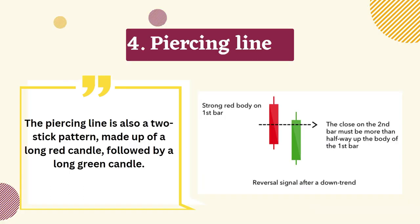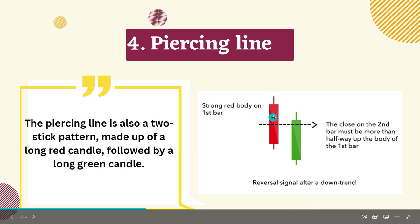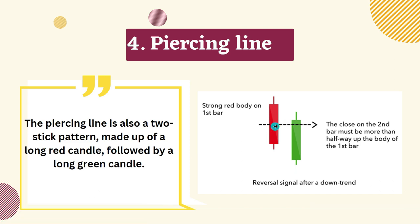The fourth candlestick pattern is the piercing line. The piercing line is also a two-stick pattern made up of a long red candle followed by a long green candle.